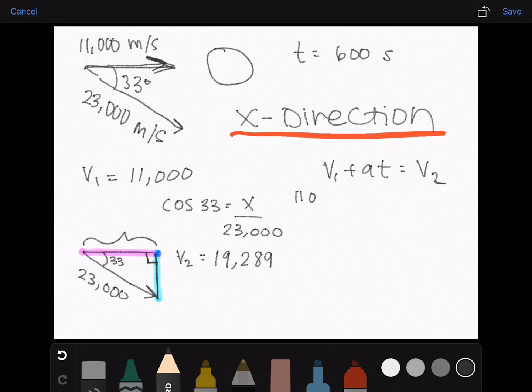11,000 plus a times 600 is t equals 19,289. Solving for a, which is in the x direction, and rounding it to two significant figures, we get 14 meters per second squared.